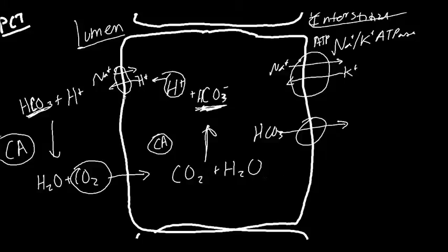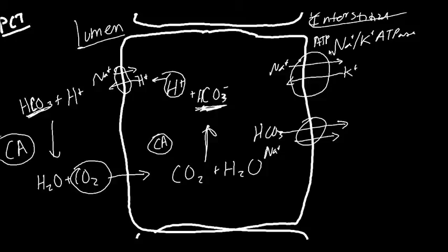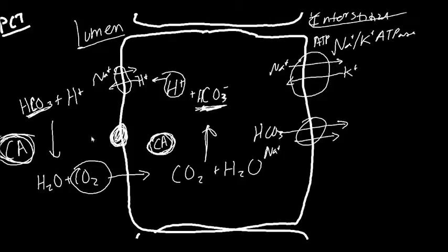On the luminal side we have a sodium-hydrogen antiporter, which is dependent on the Na+/K+ ATPase. On the basolateral side, a sodium-bicarbonate symporter transports bicarbonate from the cell into the interstitial space and bloodstream. Carbonic anhydrase is present both on the luminal membrane and inside the cell — this is the normal physiology occurring in your body right now.